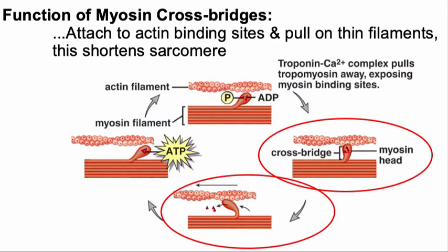Let's talk about the specific function of the myosin cross bridges. ATP hydrolysis — a hydrolysis reaction requiring a single water molecule for each ATP molecule broken down — leads to cocking of the myosin head, essentially setting it into the active position. If calcium is present, that ATP setup allows for the formation of cross bridges. And as ADP is released, it leads to the power stroke.